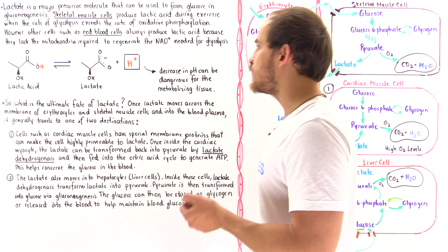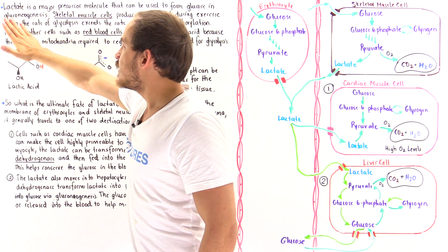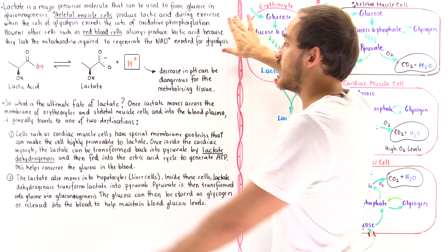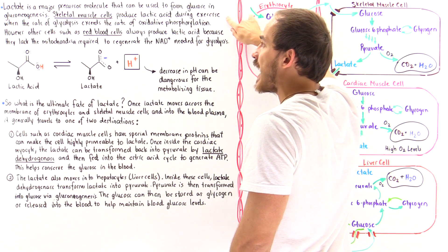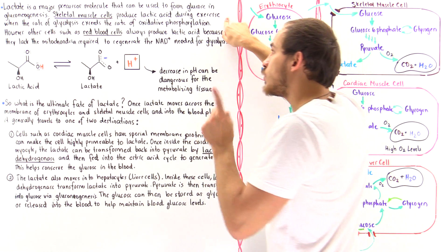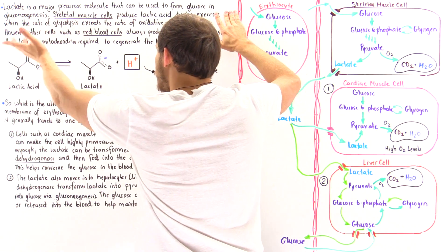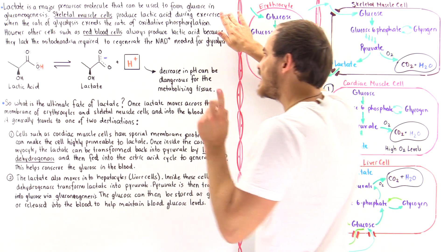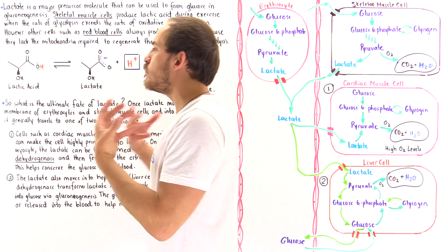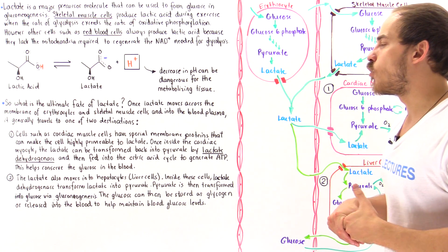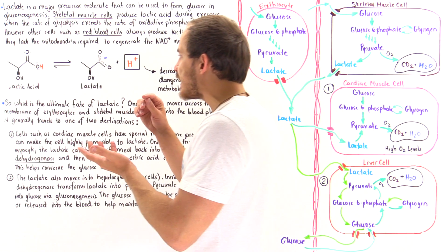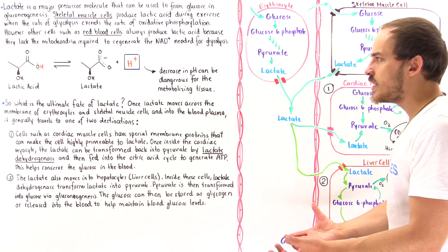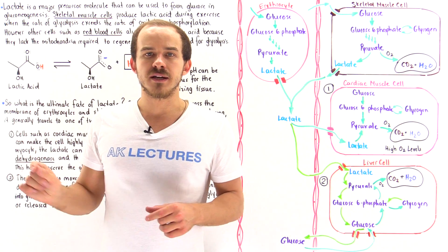Red blood cells produce many lactate molecules. Lactate is the major precursor molecule that can be used to form glucose in gluconeogenesis. Skeletal muscle cells produce lactic acid, which dissociates into lactate and H+ ions during exercise when the rate of glycolysis is greater than the rate of oxidative phosphorylation in the mitochondria. Red blood cells only produce lactic acid because they lack the mitochondria needed to regenerate those NAD+ coenzymes required for glycolysis to form ATP molecules. If cells continually use lactic acid fermentation, there will be a buildup of H+ concentration in the cell and surrounding tissue, decreasing pH and increasing acidity — which can be very dangerous.